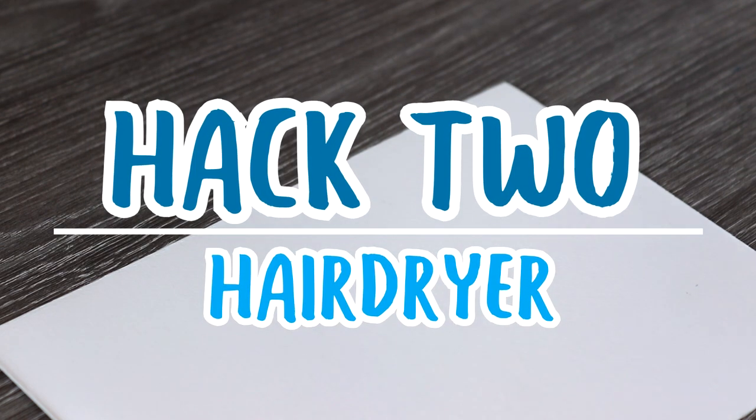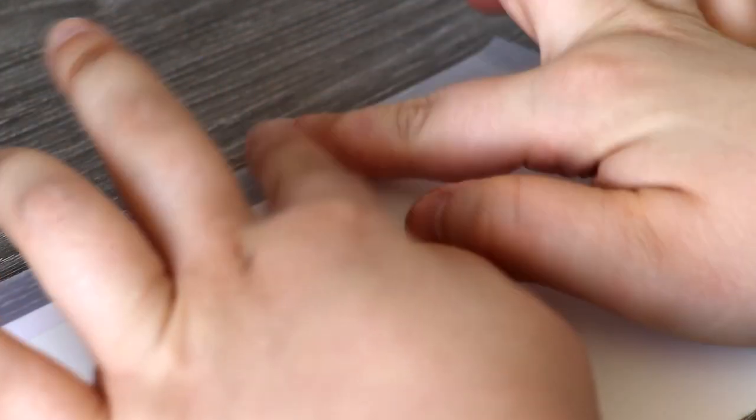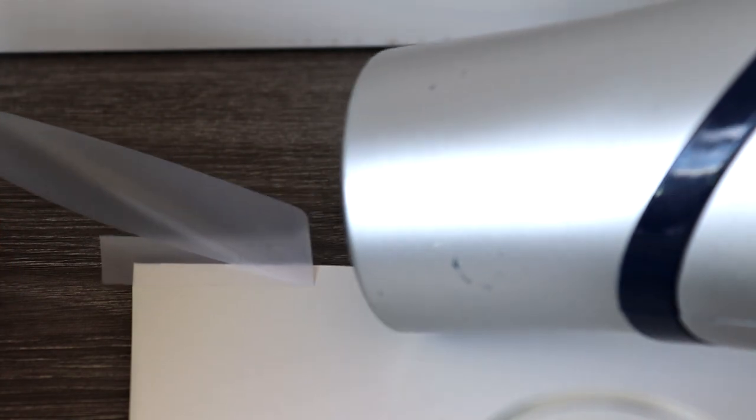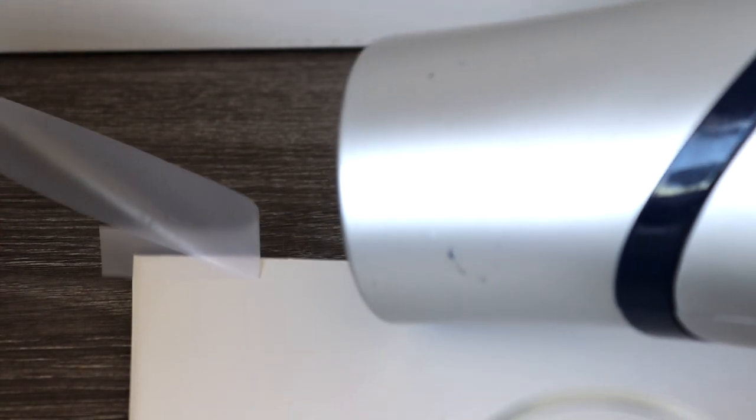The next hack is also another great way to remove tape without damaging your paper, and the only thing I'm using for this hack is a hairdryer. Put your hairdryer on a cool low setting and at a distance go over the tape to loosen the adhesive. As you start to pull the tape away from you, you can blow the warm air underneath the tape and it will just lift straight off the paper with no issue.